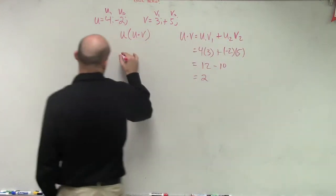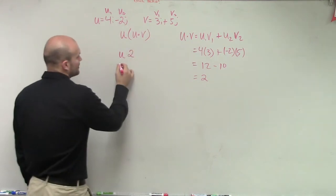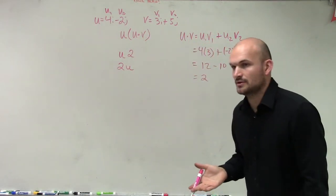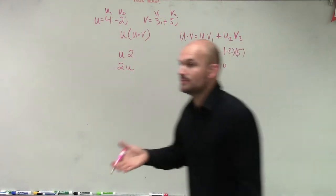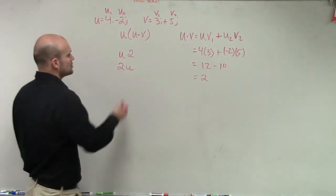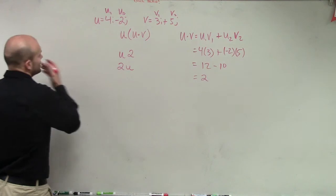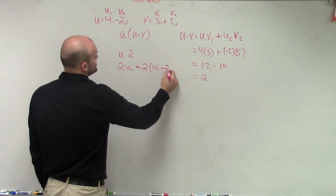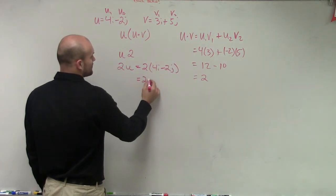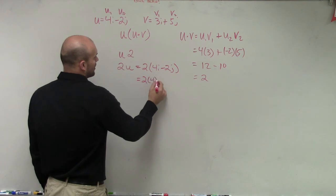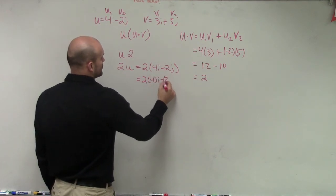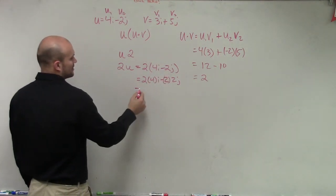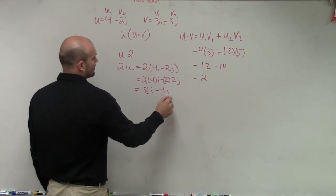So now we have the vector u times 2, or we rewrite that as 2u. Now remember, what happens when we have a scalar times a vector? What we do is we multiply that scalar times both of our terms in our vector. So 2u is now going to be equal to 2 times 4i minus 2j, which is equal to 2 times 4i minus 2 times 2j. So therefore, that equals 8i minus 4j.